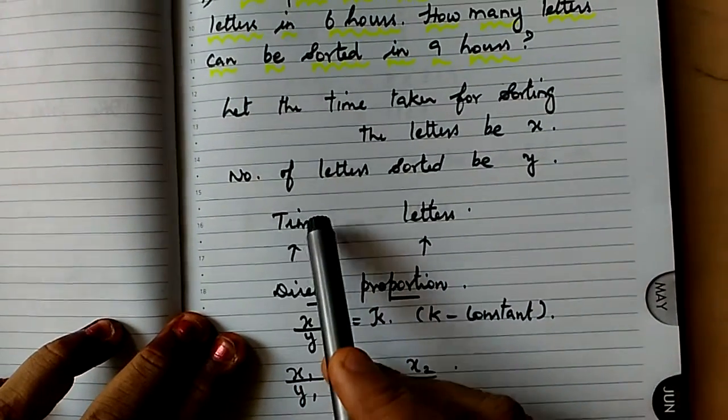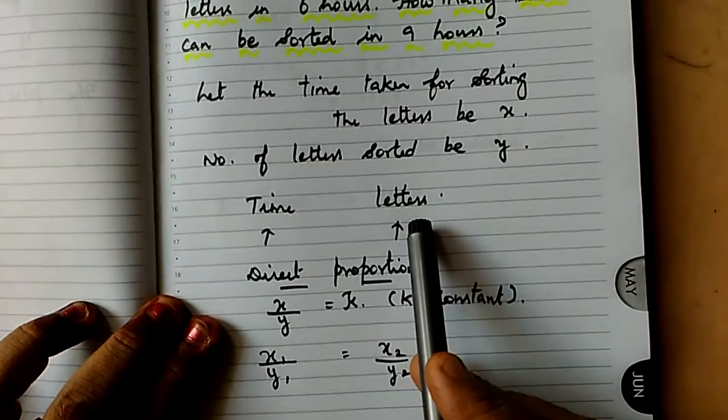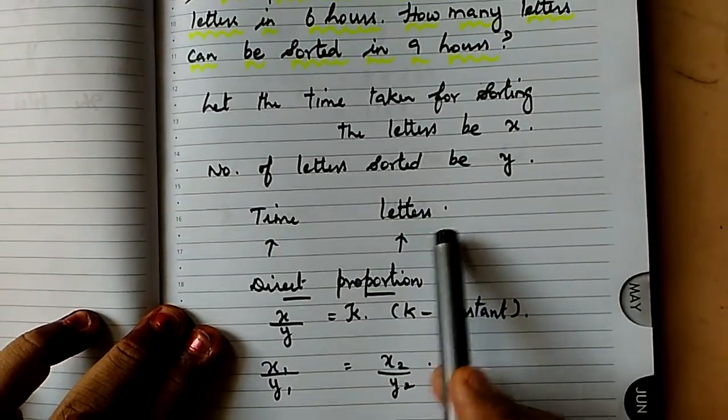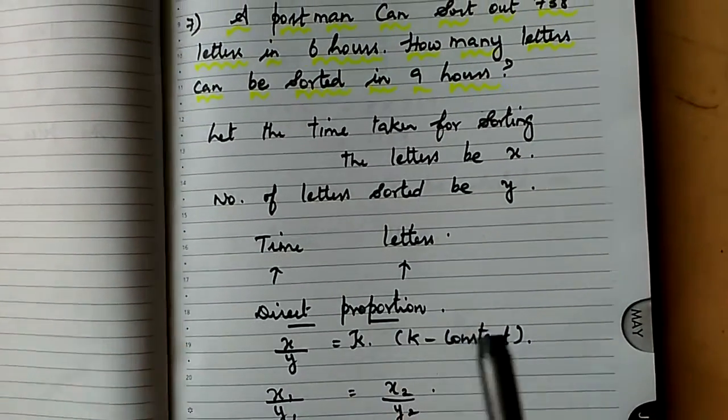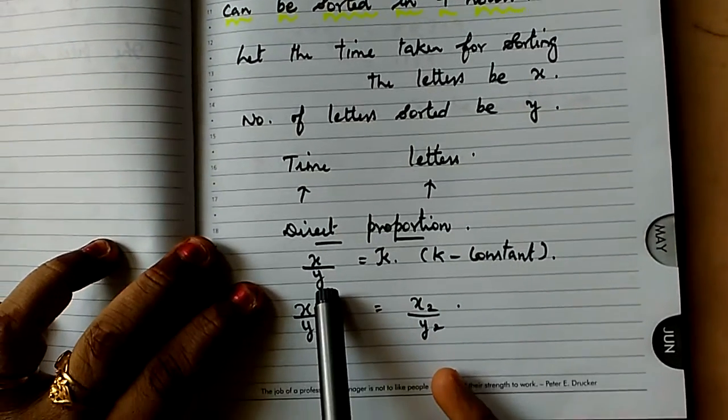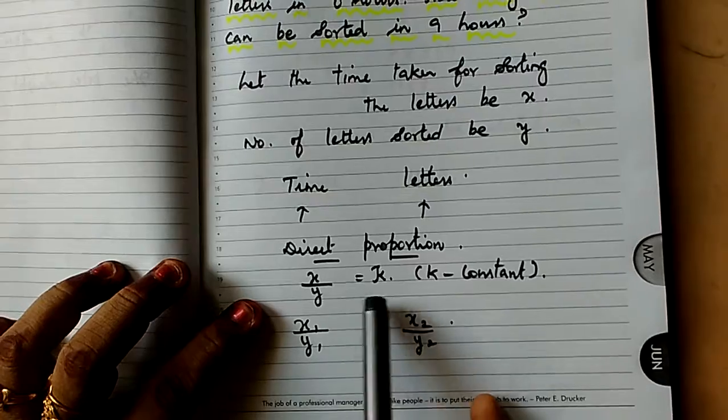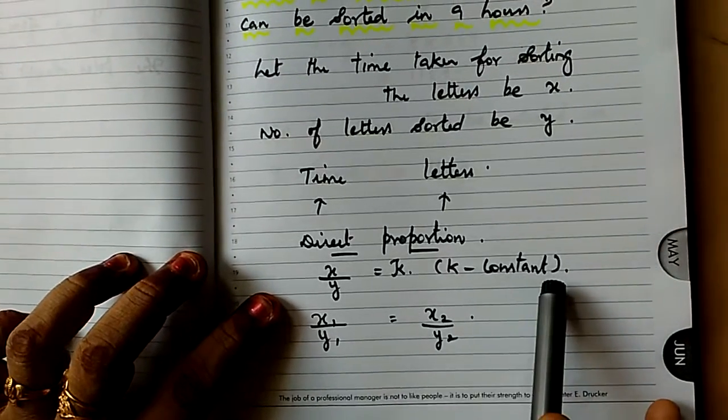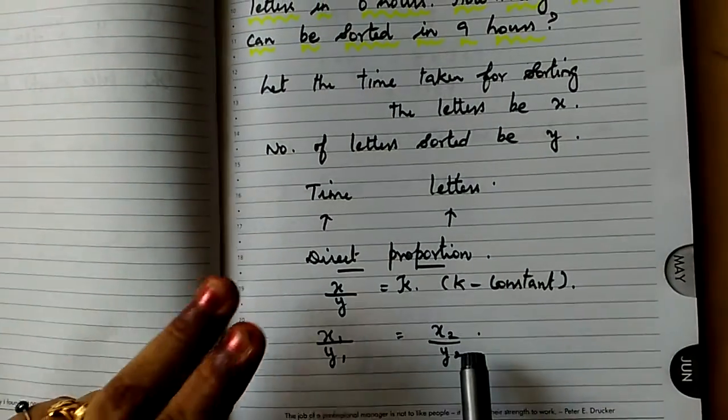If they take more time, automatically the number of letters sorted should be more. So both things are increasing, which means it is direct proportion. What is the formula for direct proportion? x by y equal to k, where k is constant. So we can write it in two parts.